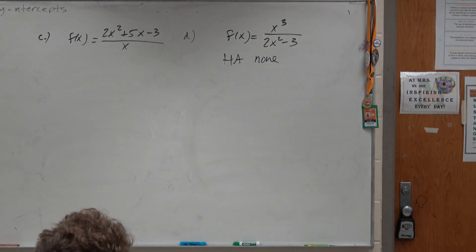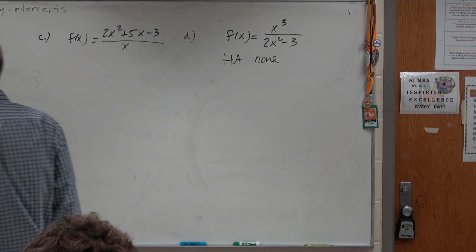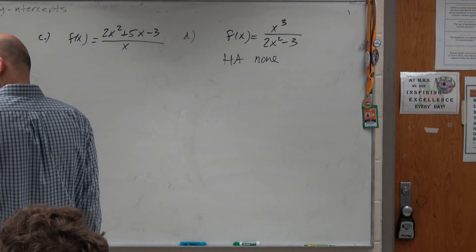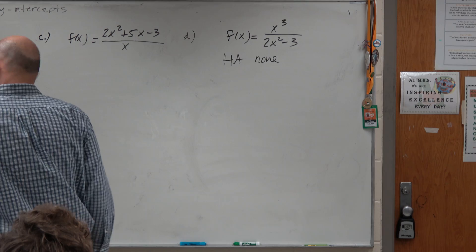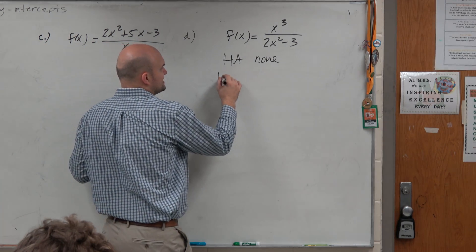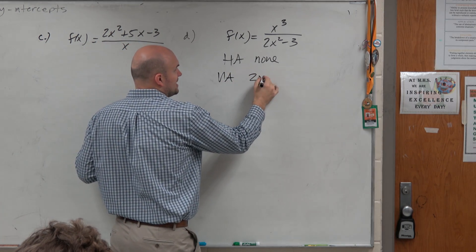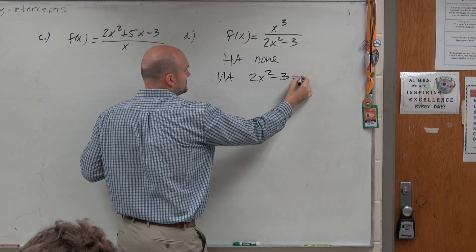Now, the other thing I got to be careful with, though, is I still got to identify my vertical asymptote. So that's when my denominator... did I write that wrong? No, I didn't. OK. So my vertical asymptote is going to be my denominator set equal to 0.